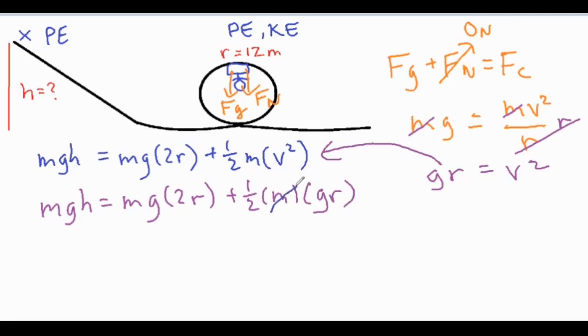Now from there our masses are going to drop out. Our G's are also going to drop out as well. So from there we know the height is equal to 2R plus one half R. So that's two and a half R.